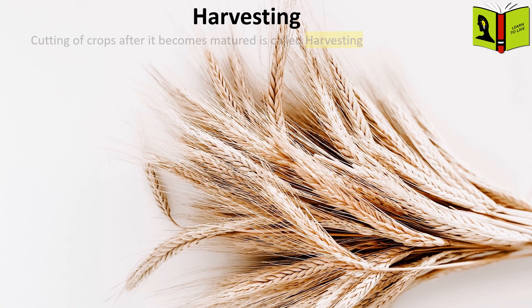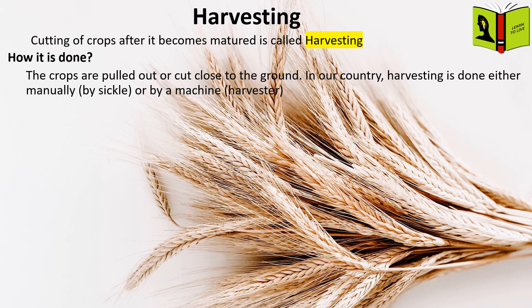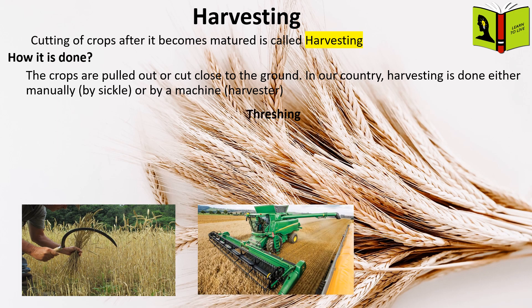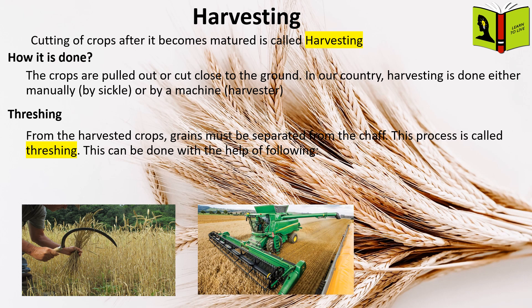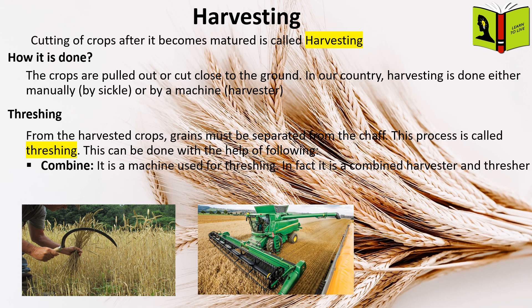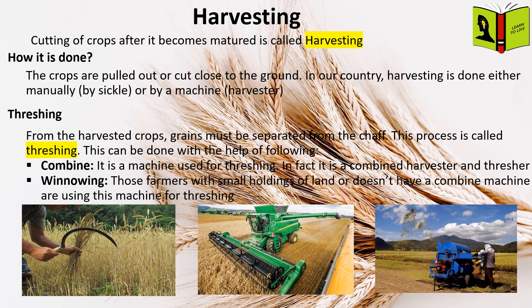Harvesting. Cutting of crops after they become matured is called harvesting. The crops are pulled out or cut close to the ground. In our country, harvesting is done either manually or by machine. Threshing: From the harvested crops, grains must be separated from the chaff. This process is called threshing. Combine: It is a machine used for threshing — in fact, it is a combined harvester and thresher. Winnowing: Farmers with small holdings of land, or those who don't have a combine machine, use this method for threshing.